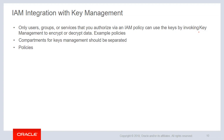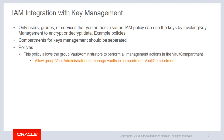Let's look at some example policies. The first policy allows the group of vault administrators to perform all management actions in the vault compartment. There is a compartment called vault compartment where you create the vault and the keys, and there is a group called vault administrators. This particular admin group might be only a few security-related admins who manage the keys within the organization, different from your storage admins or network admins.